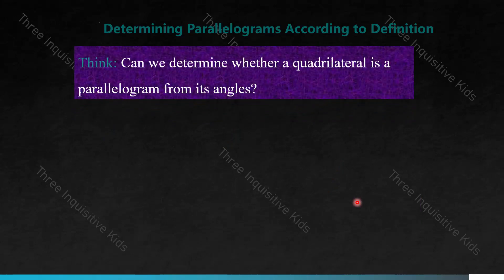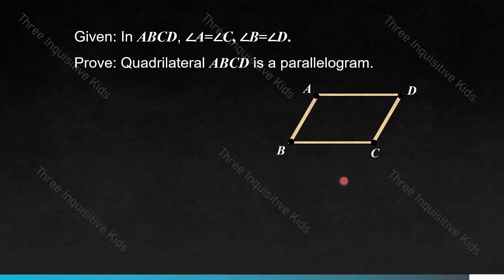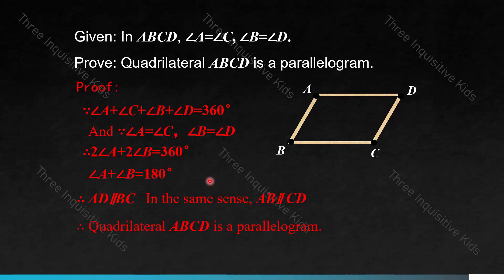Here is the final method of determining parallelograms — according to definition. Can we determine whether a quadrilateral is a parallelogram from its angles? In quadrilateral ABCD, angles A and C are equal, and so are angles B and D. Since angles A, B, C, and D add up to 360 degrees, and angle A equals angle C while angle B equals angle D, we get 2 times angle A plus 2 times angle B equals 360 degrees. Therefore angle A plus angle B equals 180 degrees — dividing both sides by 2. From this we know AD is parallel to BC, and AB is parallel to CD. Therefore quadrilateral ABCD is a parallelogram.